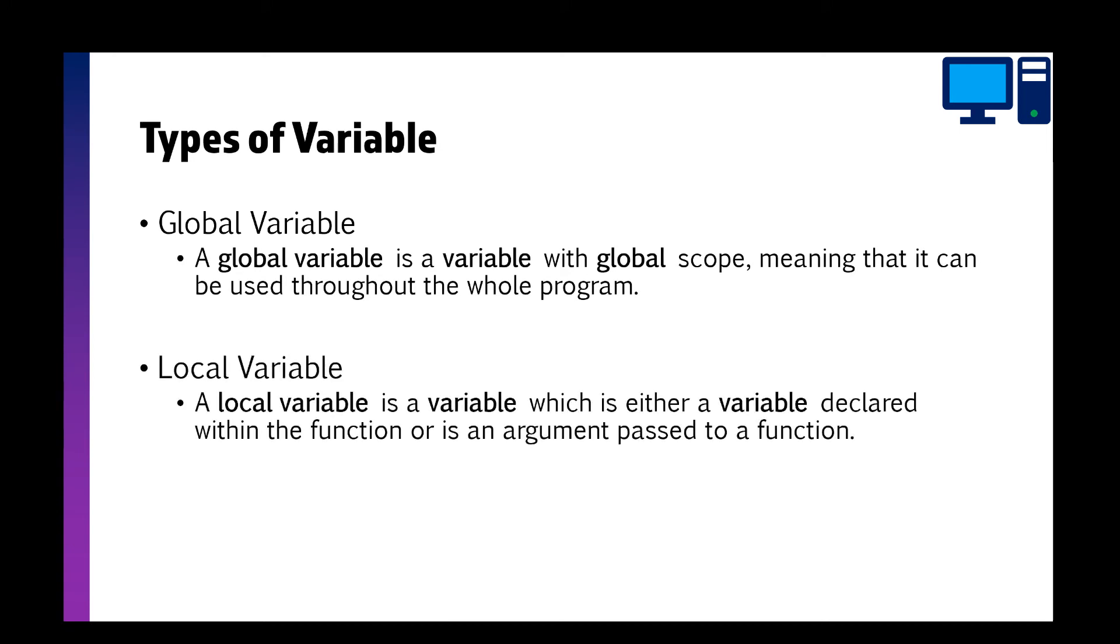Now there's two types of variables we're referring to when we're talking about functions and procedures. You have global variables and local variables. A global variable is a variable that has global scope, which means it can be used in any part of the program, whereas a local variable is a variable which is declared within a function or procedure, or it could be passed into the function or procedure and it can only be accessed within that local area.